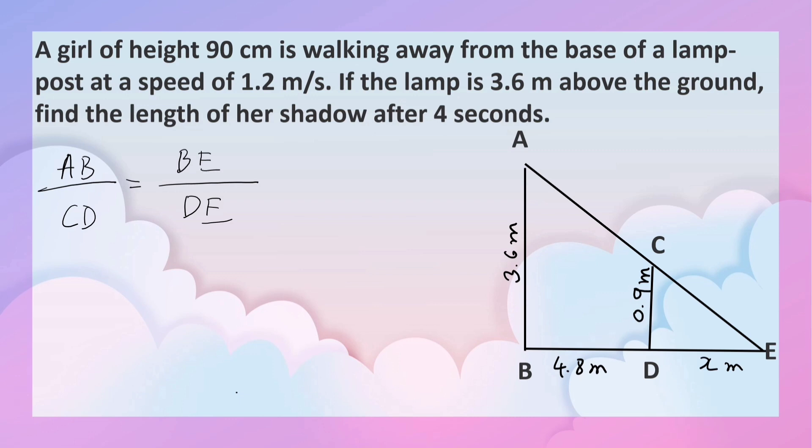To substitute the values: what is AB? 3.6. What is CD? 0.9. What is BE? 4.8 plus X. We have to find DE. Now, here we can remove the decimal point and write 36 by 9. This equals 4.8 plus X by X.